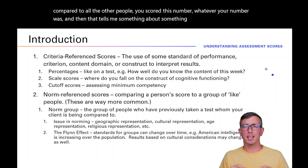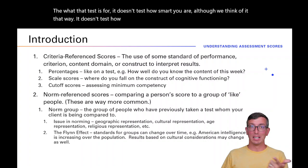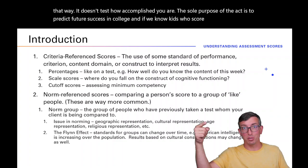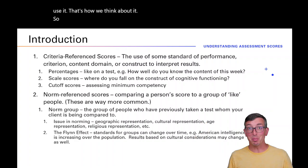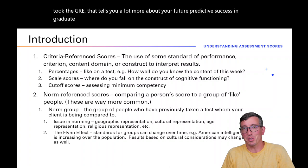By the way, the ACT doesn't test how smart you are, though we think of it that way. The sole purpose of the ACT is to predict future success in college — if kids who score higher tend to do better in college, a higher score makes admission more likely. Same thing with the GRE — it tells you more about predictive success in graduate school than how smart you are. But you can see how people would make that stretch. The issue in norming is also geographical and cultural representation.